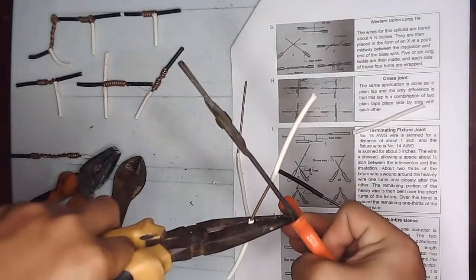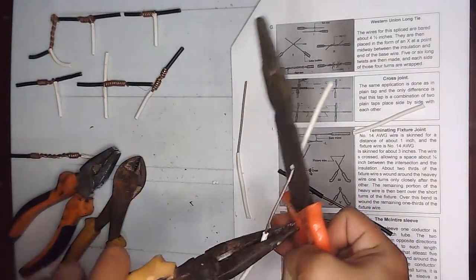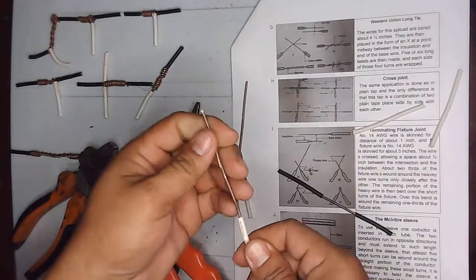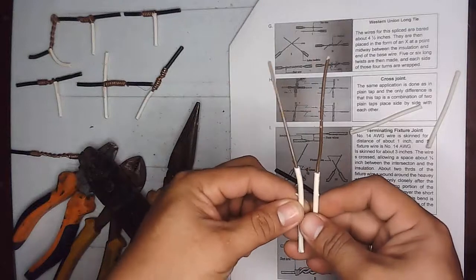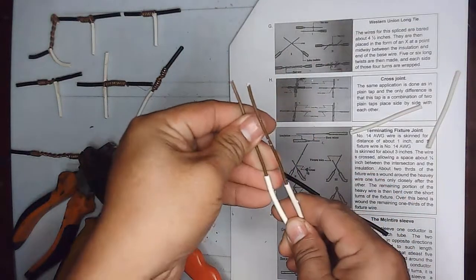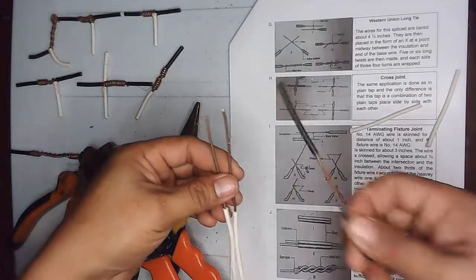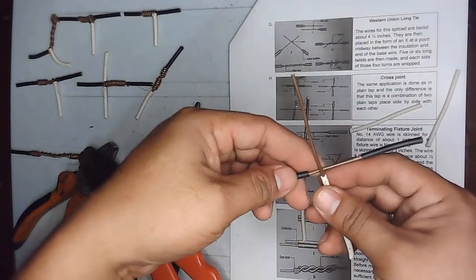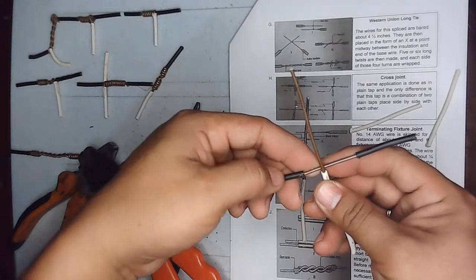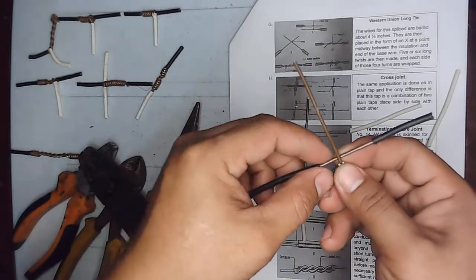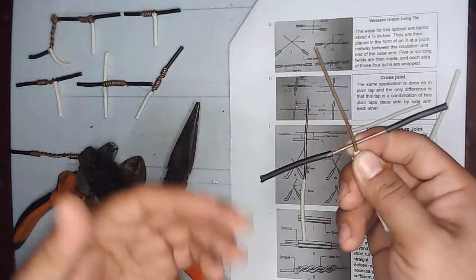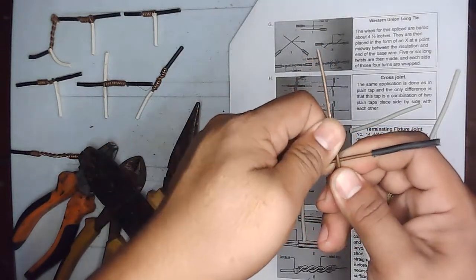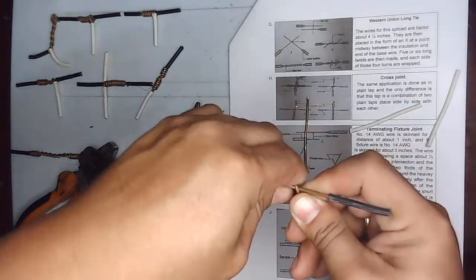The same also with the second top wire. So now we have here the two top wires and a main wire. First, let's begin at the center. The same application is done as with the plain top joint. We'll start going to the left.